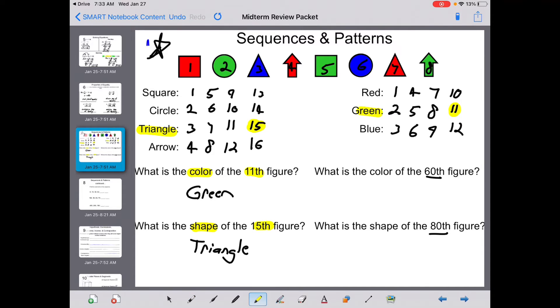What you're going to notice is there's a pattern here for color. 3, 6, 9, 12. These are multiples of 3. 60 is a multiple of 3. Therefore, the color must be blue. Same here. You're going to notice for arrow, 4, 8, 12, 16. It's multiples of 4. 80 is a multiple of 4, too. So it must be an arrow.